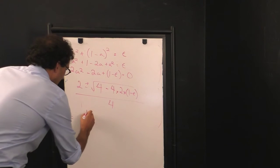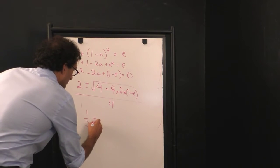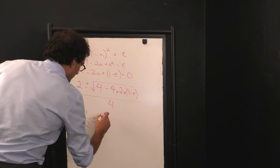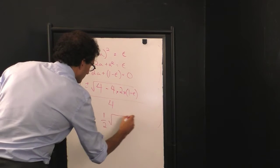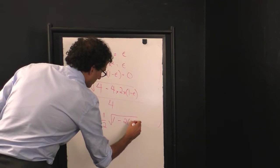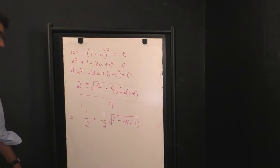If I simplify that, I get 1 half plus or minus, and now I can pull out the factor of 2 here. So, we have 1 half square root 1 minus 2 times 1 minus epsilon. So far so good.